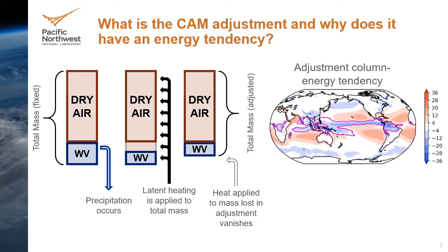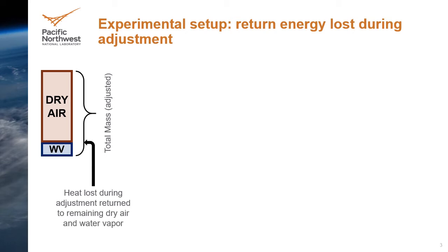To test the impacts of such a large regional energy error, we run an experiment where we quote unquote give back the energy lost. In this experiment, the energy lost to the mass of rain is simply applied to the dry air and remaining uncondensed water vapor. In other words, it would be as if we applied the latent heating to the mass of air remaining after condensation. Conceptually, this is like moving toward a framework where only the dry air has sensible energy. The experiment also provides us the opportunity to test the impacts of the regional energy pattern from the adjustment on the model's simulated climate.